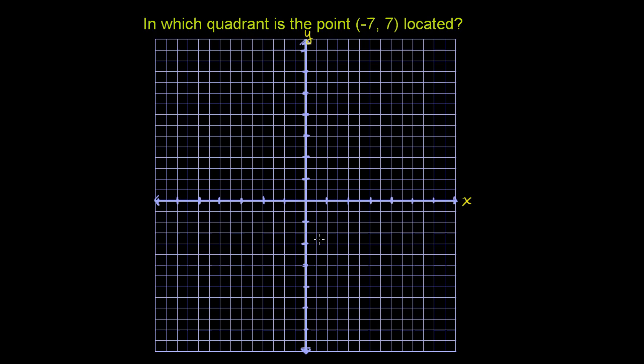We call each of these sections quadrants. This one over here, where both the x-values and the y-values are positive, we call the first quadrant. And we use the Roman numeral I.